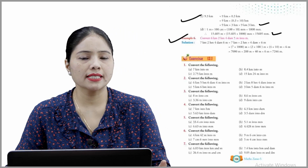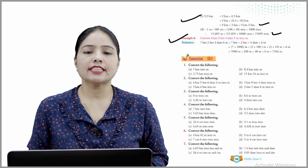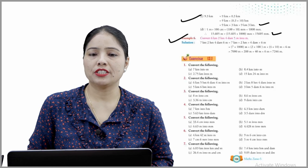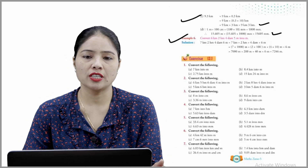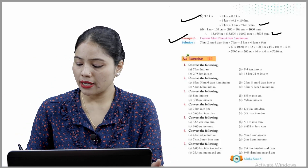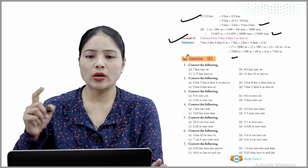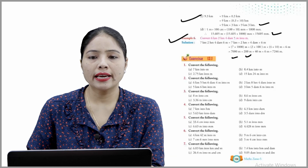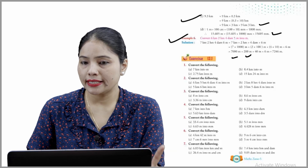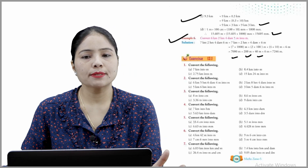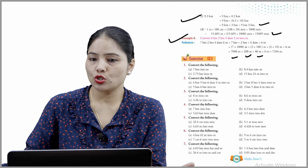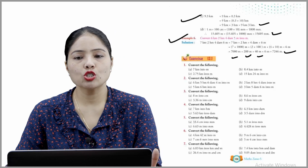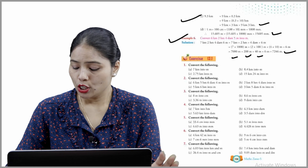Example 6 — convert 6 km 2 HM 4 dam 6 meters into meters. Convert each unit: 7 km = 7000 m, 2 HM × 100 = 200 m, 4 dam × 10 = 40 m, and 6 meters stays. Add all: 7000 + 200 + 40 + 6 = 7246 meters.